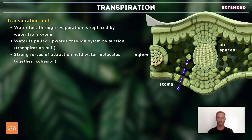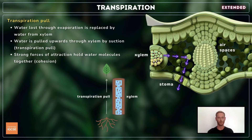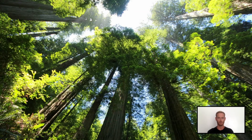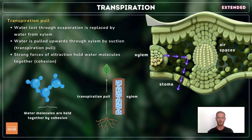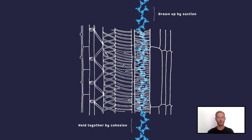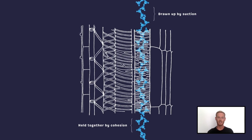As water evaporates from the cells, it's replaced by water from the nearest xylem vessel. As a result, water is pulled through xylem vessels by suction and up the stem from the roots. This is known as a transpiration pull and is strong enough to pull water up to great heights in trees. It's made possible by strong forces of attraction between the water molecules, known as cohesion. In the very narrow xylem vessels, cohesive forces are strong enough to maintain a continuous stream from root to leaf.